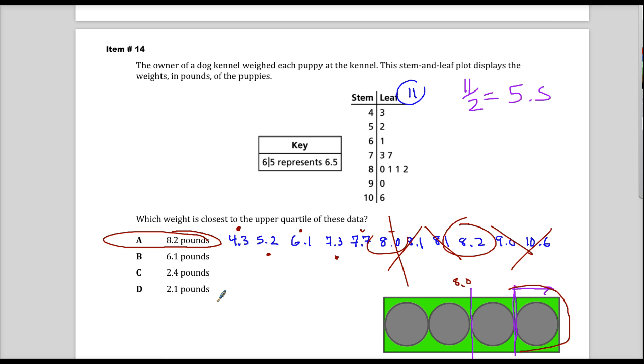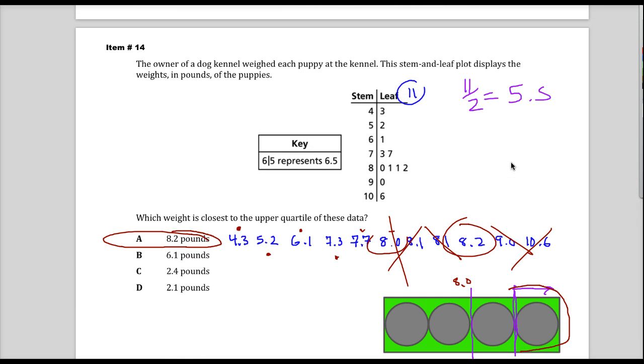Really, two of the answers make no sense whatsoever. They give you 2.4 and 2.1. It's not even on there. I don't even know what they did to get those answers. 6.1, by the way, would be the point of the second quartile. So if you needed what's called Q2, upper quartile would be Q3. The quartile is Q4. But here's Q3, Q2. So the point where Q2 starts would be 6.1. But that's not what we're looking for. We're looking for the upper quartile.